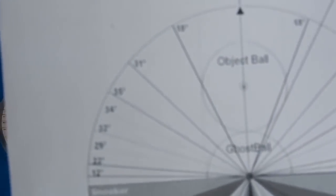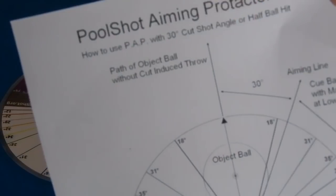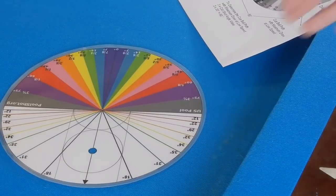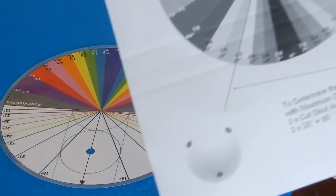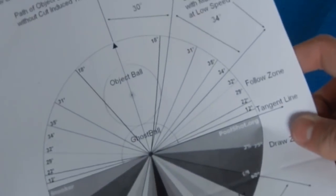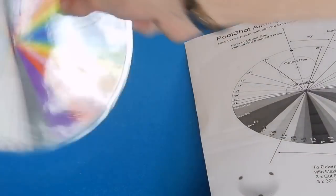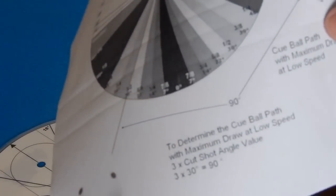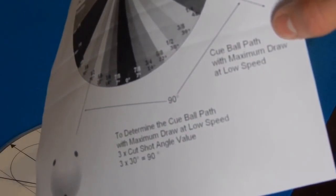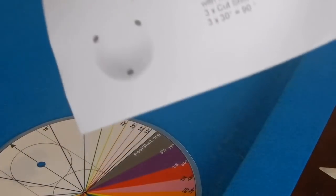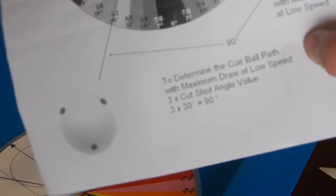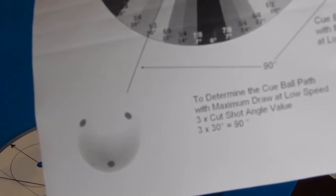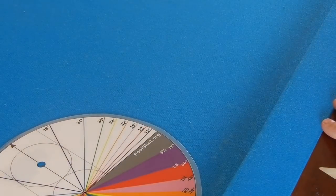It also comes with the rules right here. You can see the different systems you can use. With a 30-degree cut shot angle, or half ball hit, hitting half of the ball, it leads along these lines. You've got your aiming line, your follow zone, your tangent line which is along the middle, and the rule to determine the cue ball path with maximum draw at low speed: three times the cut angle value. So if it's 30 degrees, three times 30 equals 90, so we're going to draw along that tangent line.